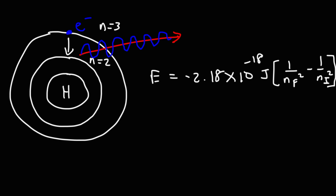This is the initial energy level — in this case, n equals 3. This is the final energy level, where it's going to, n equals 2. When an electron absorbs a photon, it can jump from a low energy state to a high energy state. But when it falls from a high energy state to a low energy state, it can release a photon in the form of an electromagnetic wave.